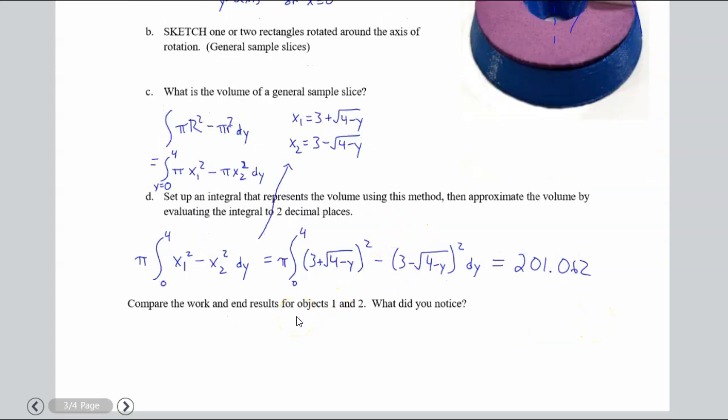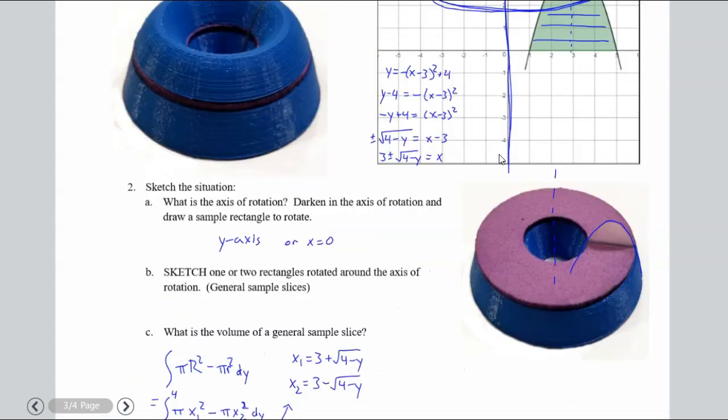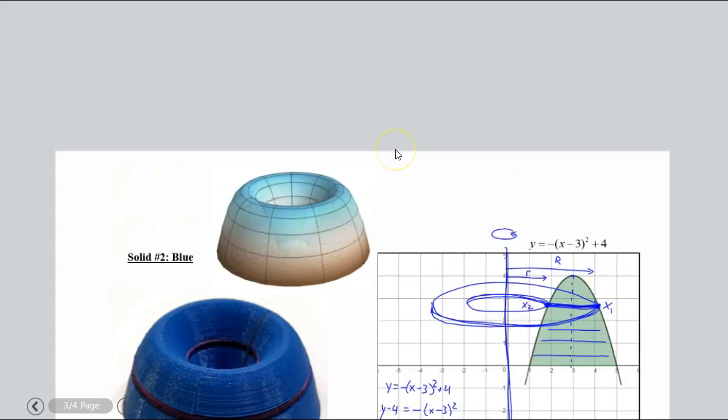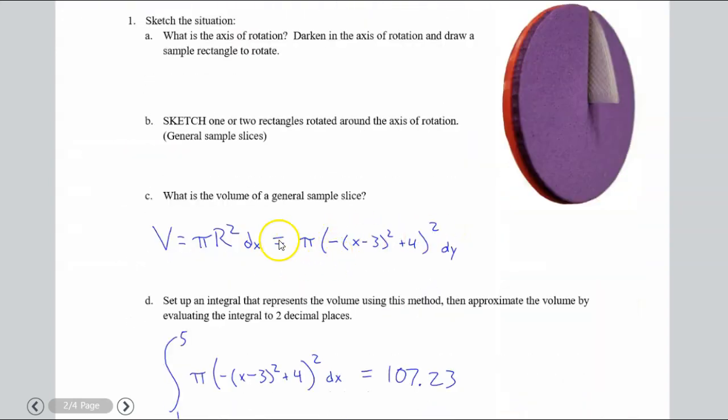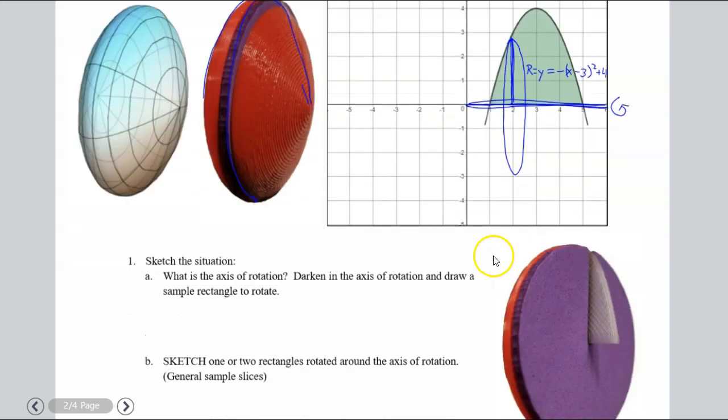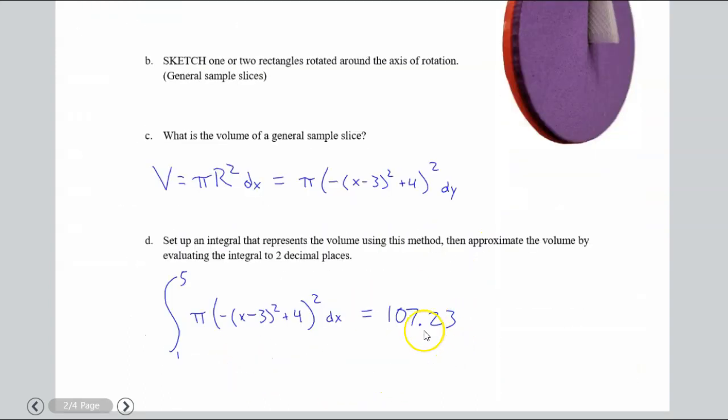Real quick, this idea right here, compare the work and end results for objects one and two, what did you notice? So go ahead and think about that. I mean write something down, pause the video and then come back and take a look at some thoughts that I have. All right. So what you can see on the discs and the washers. So when we did the discs in the previous video, it wasn't too bad. We had this Y value and we basically just plugged that in for R and calculated it out with Desmos. So again, you could use the calculator, but it's basically plug and chug. Once you find the R, you just plug it in and calculate it. It wasn't too bad.